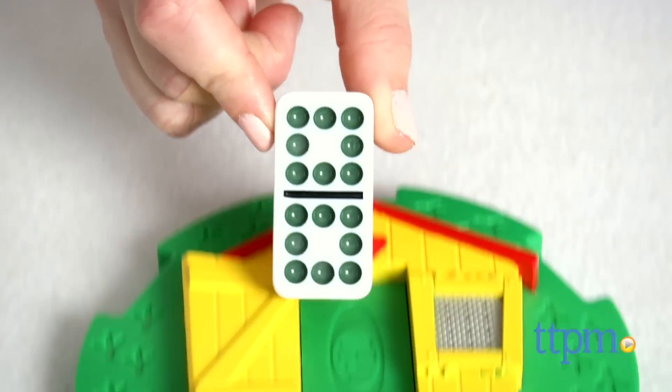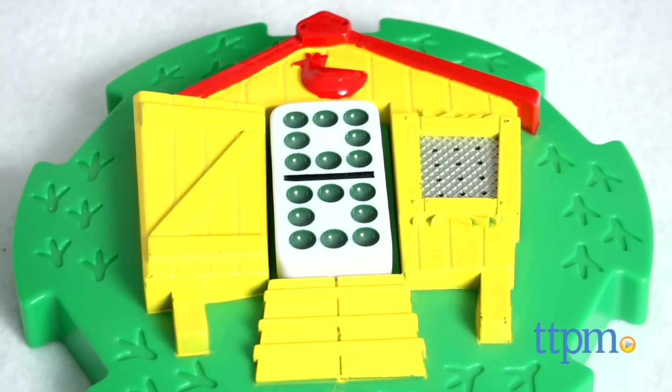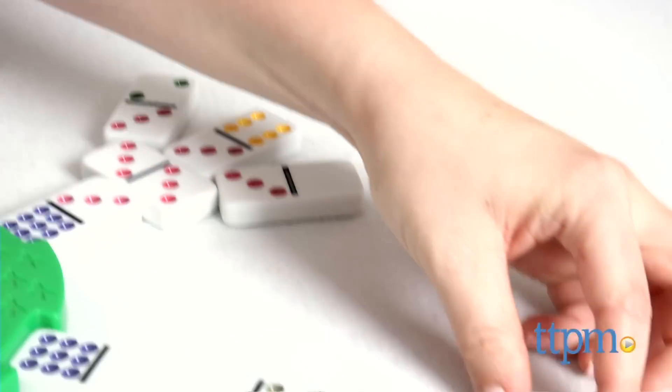To start the next round, each player gets new dominoes, and the player with the double eight in his hand plays first. Play continues until this hand is finished, and in the third round, the player with the double seven plays first, and so on and so on.